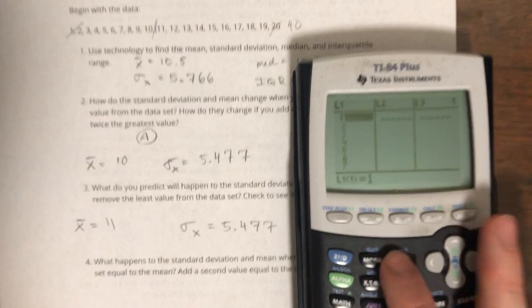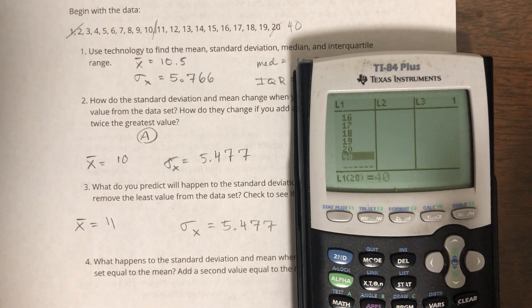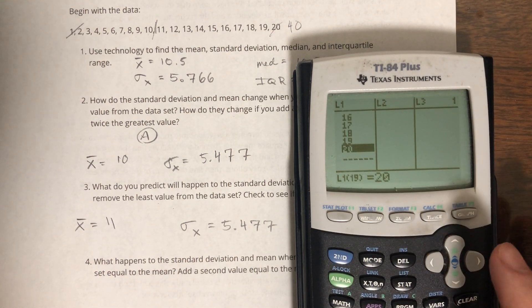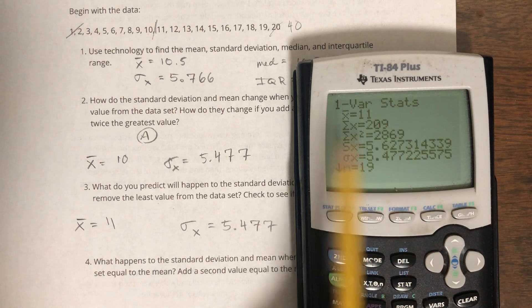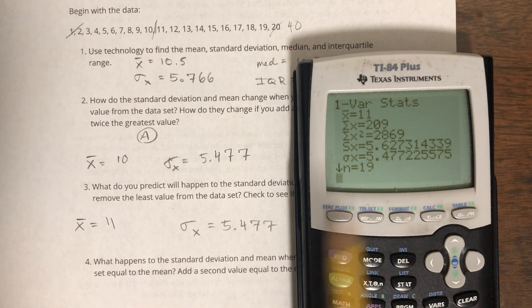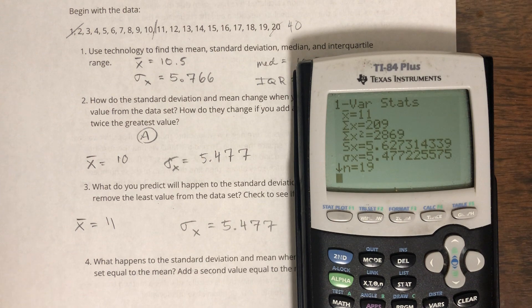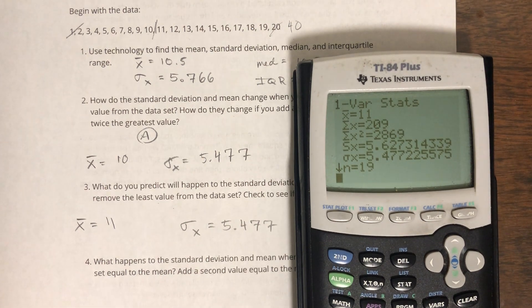I'm going to remove 1 and I'm also going to remove that 40 because that was not part of the deal. Okay, so let's see if this works. My mean is 11 and my standard deviation is 5.477. So my prediction was correct, great.